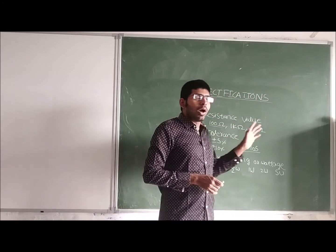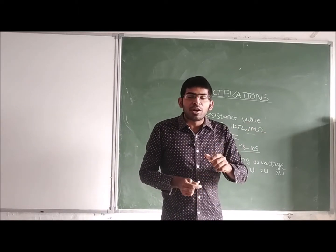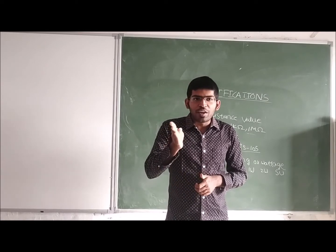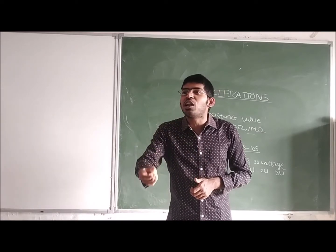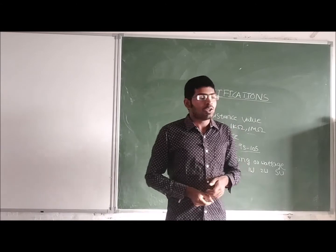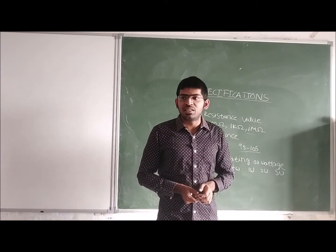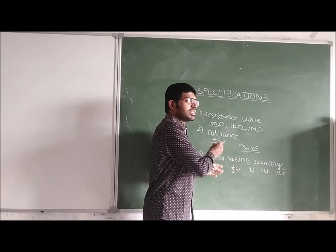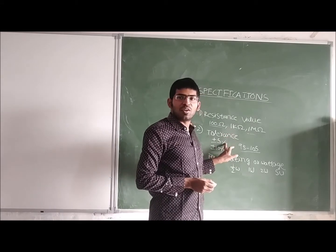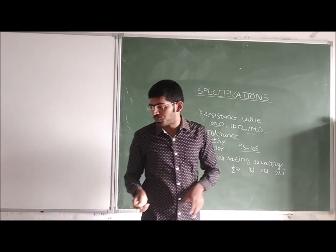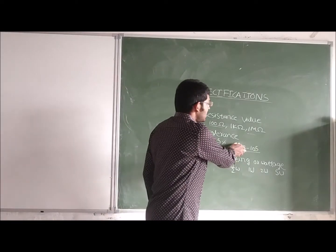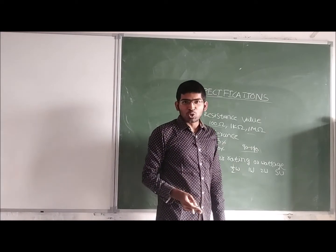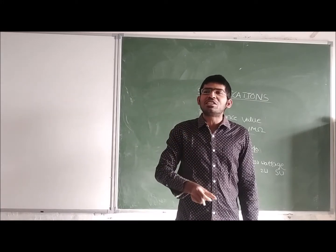The second specification is tolerance. If you take a 100 ohms resistor and connect it in the circuit, it may not give exactly 100 ohms — it may give 99 ohms or 101 ohms. The variation of the resistance from the indicated value is called tolerance. It is expressed in percentage. When we say plus or minus 5 percent tolerance, the resistance value is in the range of 95 to 105 ohms. When we say plus or minus 10 percent tolerance, the resistance value is in the range of 90 to 110 ohms.